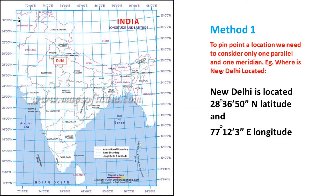You may be asking: what are minutes and seconds? Don't confuse these with time. Each degree of latitude and longitude is divided into 60 minutes, and each minute is divided into 60 seconds. Using this, we can pinpoint a location precisely.